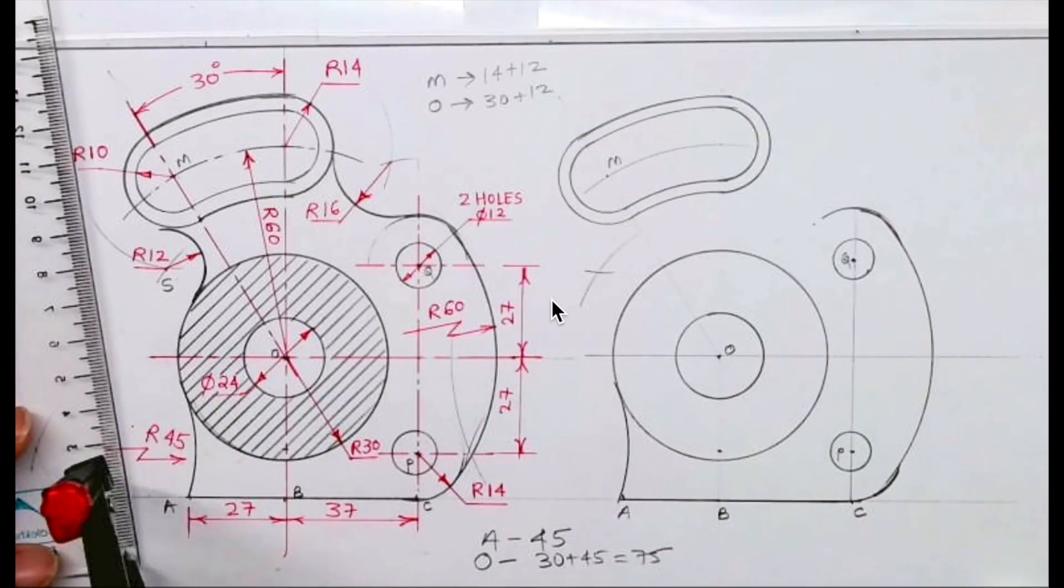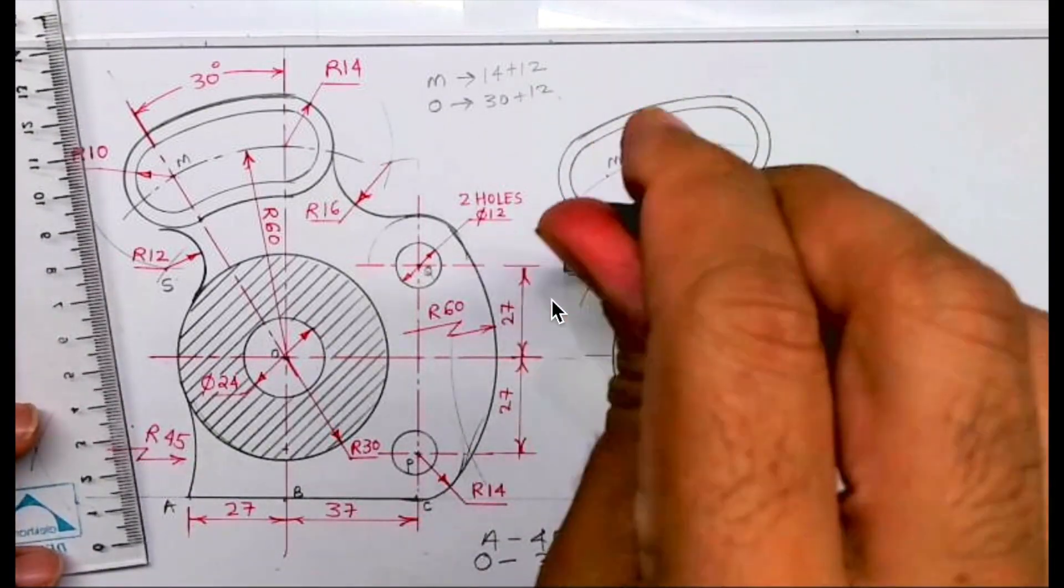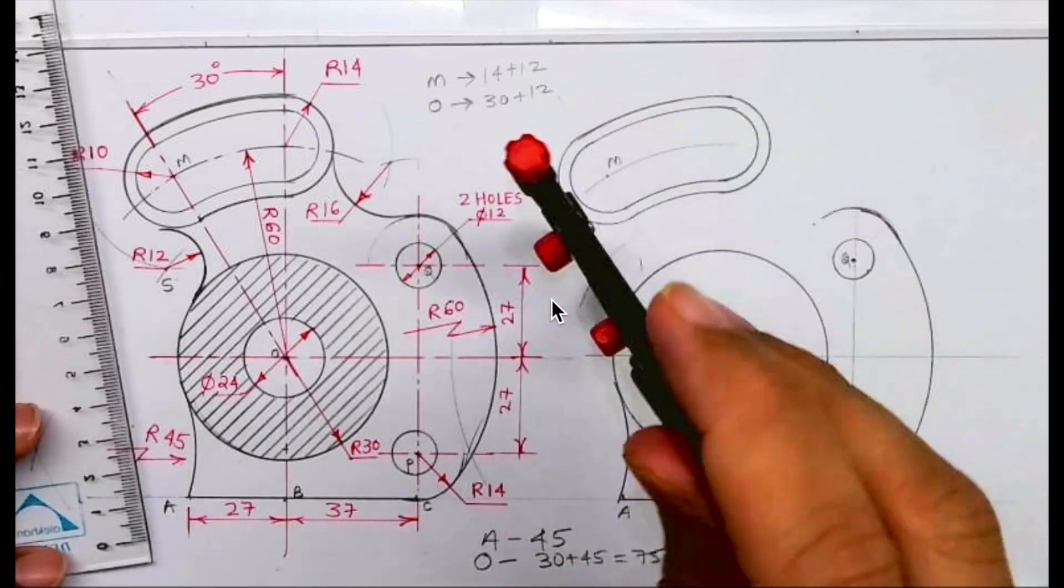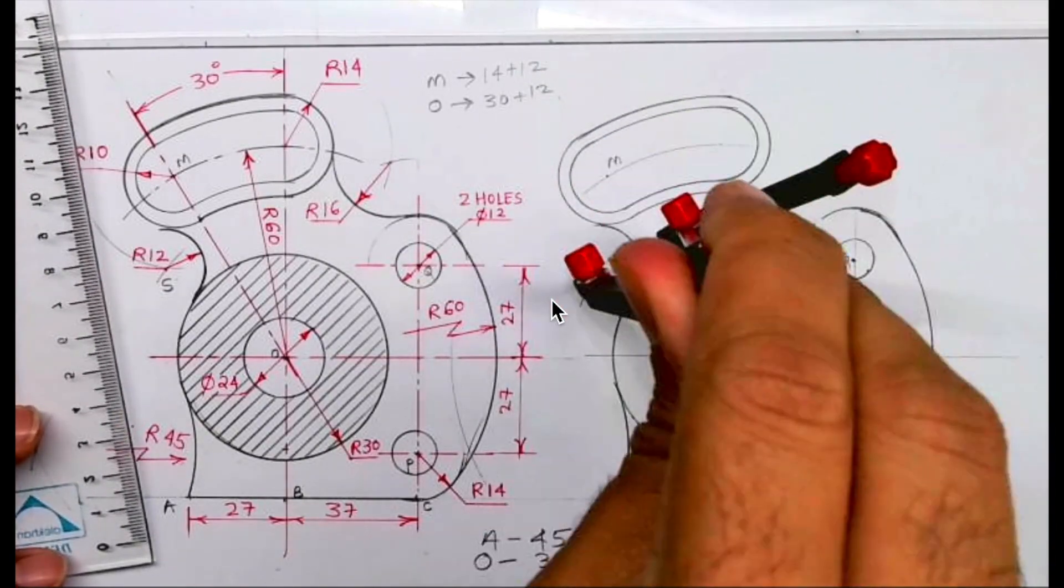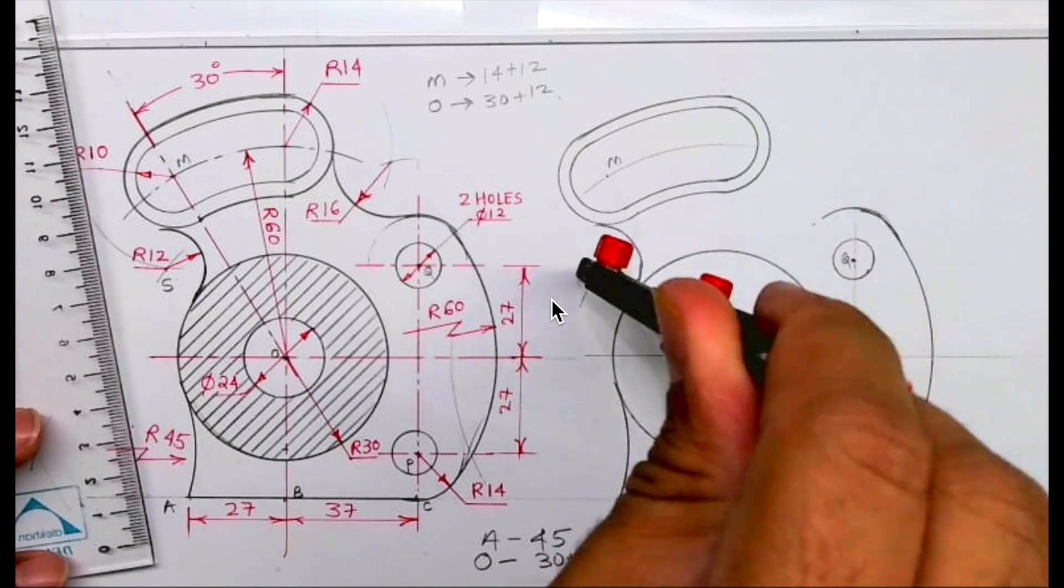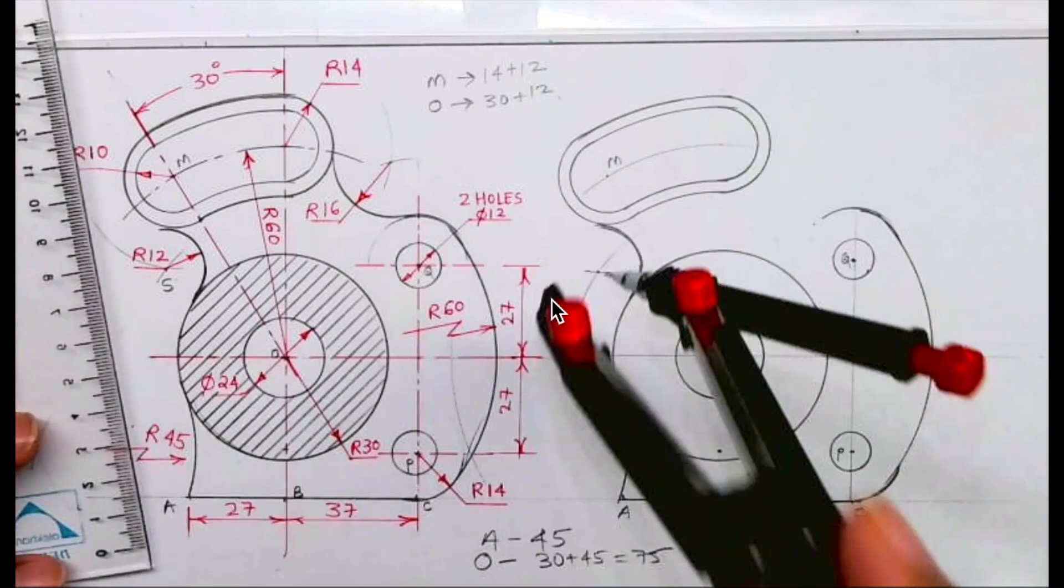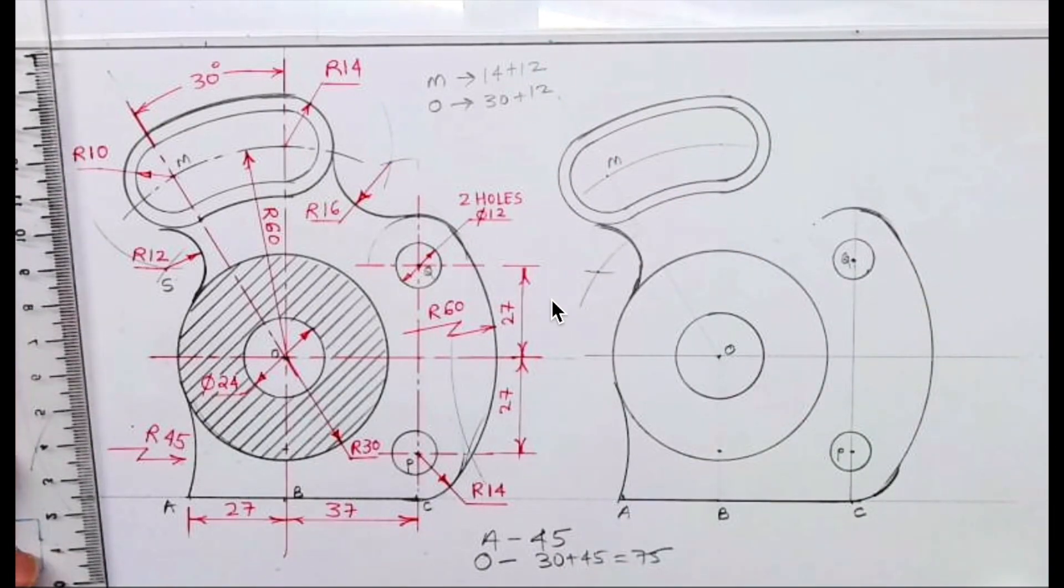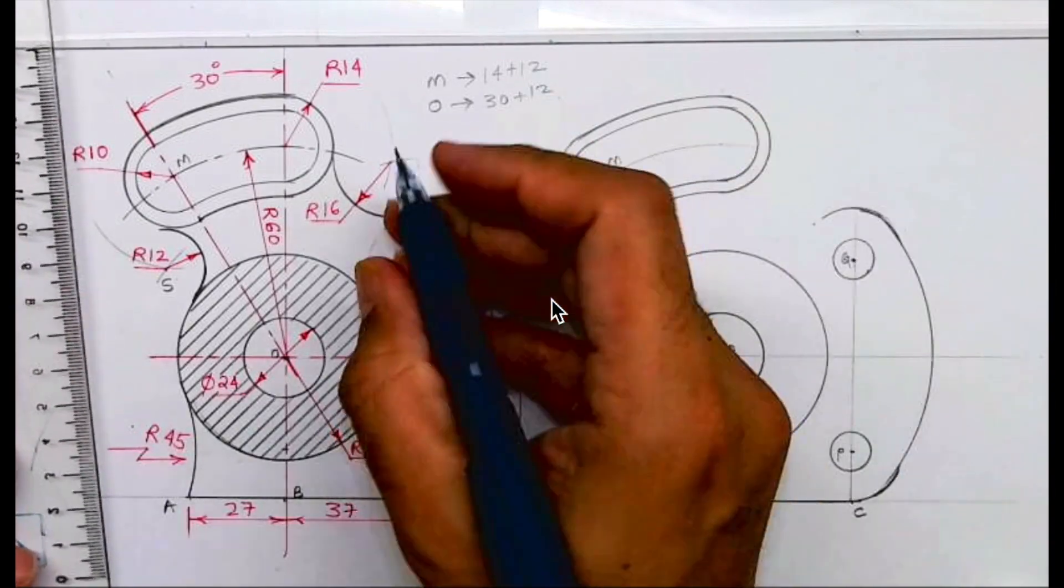Wherever they intersect, that is point S. From that point S we can draw radius 16.